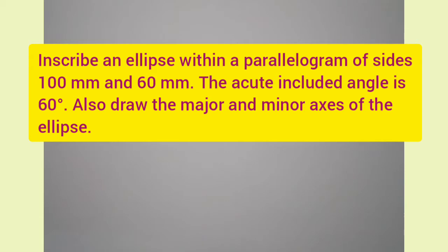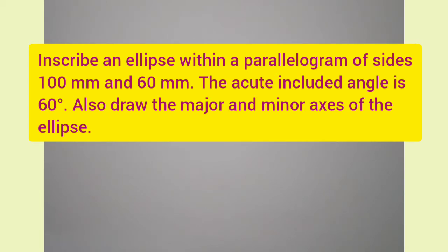The dimensions of the parallelogram are given as 100 mm and 60 mm. Also the acute included angle is given as 60 degrees. We have to draw the ellipse within this parallelogram, and after drawing the ellipse, we have to find the major and minor axis. We will use the parallelogram method to solve this question.